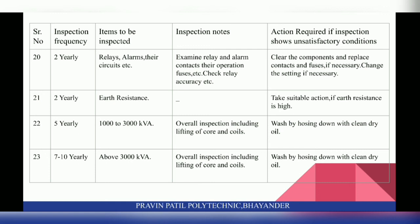On a five-yearly basis for transformers of 1000 to 3000 KVA, perform an overall inspection including lifting of the core and coils, and wash by hosing down with clean dry oil. For transformers above 3000 KVA, this overall inspection is done on a seven to ten yearly basis. In both cases, all parts of the transformer must be thoroughly inspected.